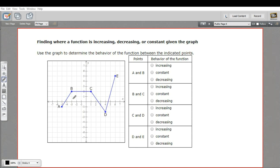Uphill means increasing. Staying the same means it's constant, and downhill means the function is decreasing.